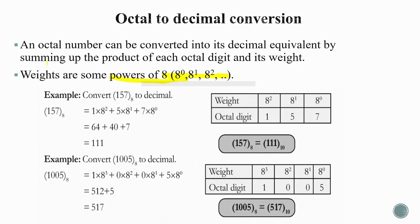Consider the octal number 157 base 8 converted to decimal. Write the digits 1, 5, 7 and assign weights starting from the LSB: 8⁰, 8¹, 8². Multiplying and adding: 1 × 8² + 5 × 8¹ + 7 × 8⁰ = 64 + 40 + 7 = 111. So 157 base 8 equals decimal 111.